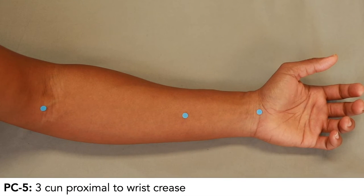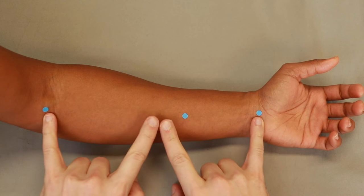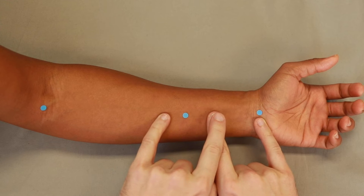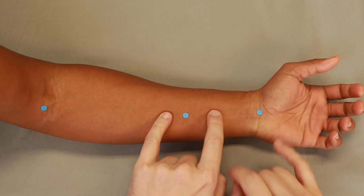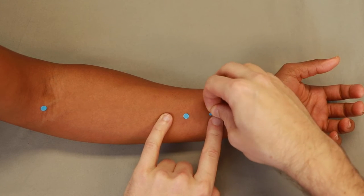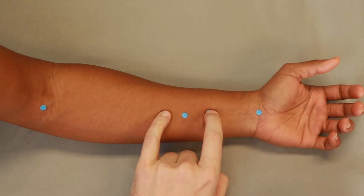And pericardium 5 is 3 cun proximal to the wrist crease. So here's 12 cun, half of 12 is 6. Half again is 3. And so that gives us 3 cun for pericardium 5.